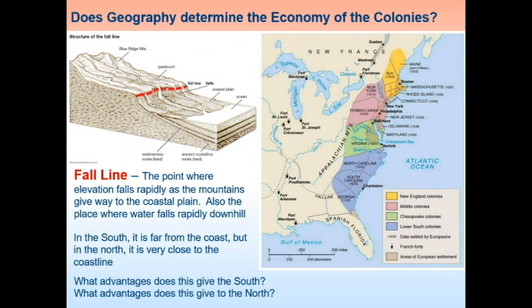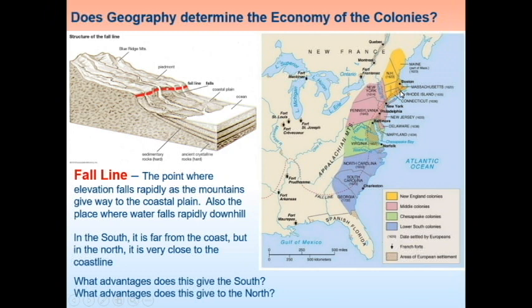You'll see a lot of falls. In the south, as this map shows, the fall line is very far from the coast — sometimes hundreds of miles. But in the north, the fall line runs really close to the coastline. What advantages do you think this gives the south, and what advantages do you think this gives the north? A fall line far back gives certain advantages, and a fall line really close gives different advantages.